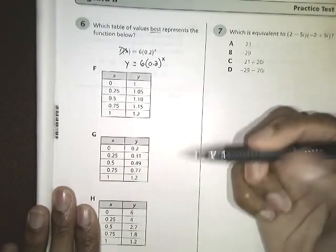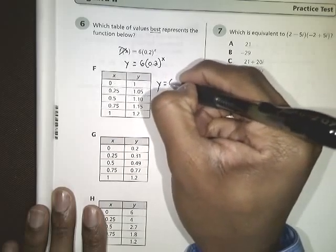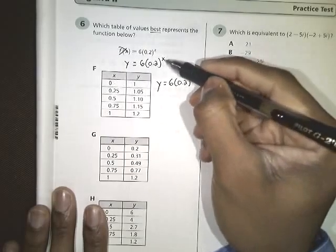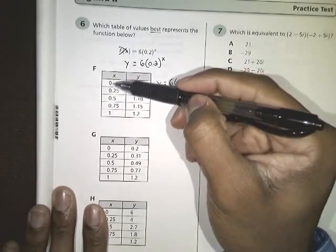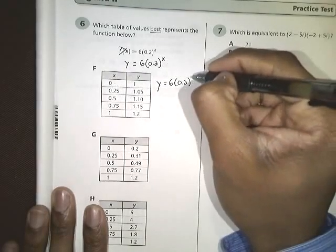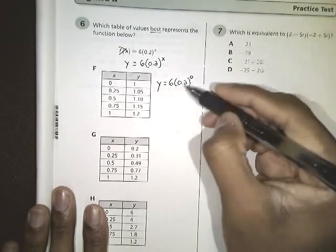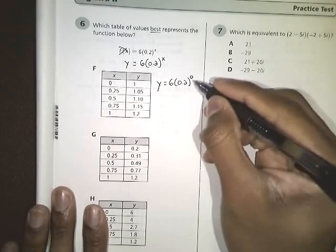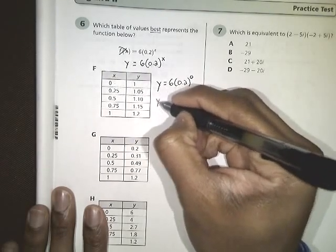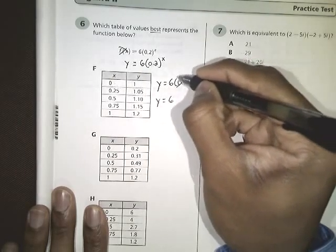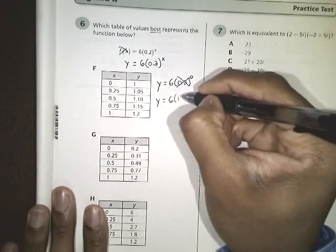So if we have y equals 6 times 0.2, and we're supposed to be raising it to the x power, well, our first x value that we have is 0. So that's why we're going to plug in 0 here for the x. Well, 0.2 raised to the 0 power, or anything for that matter raised to the 0 power, is just 1. So this whole thing here just became a 1.